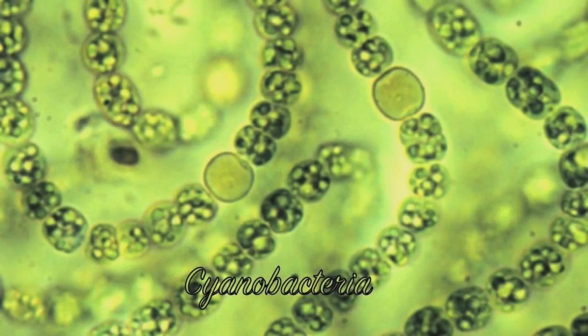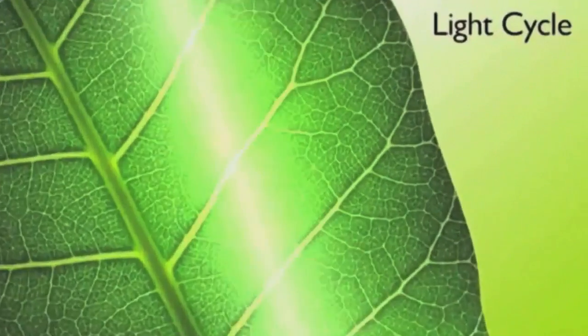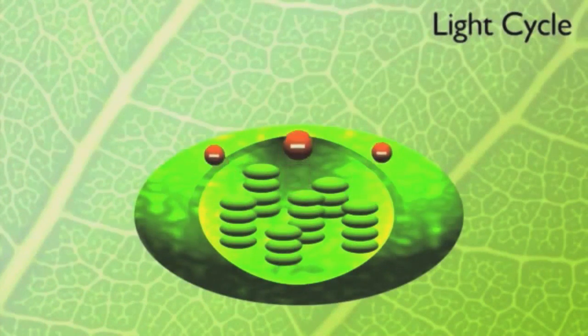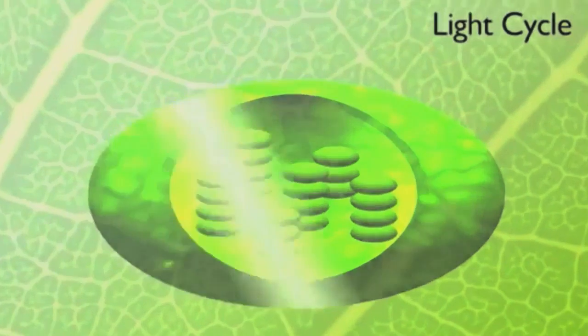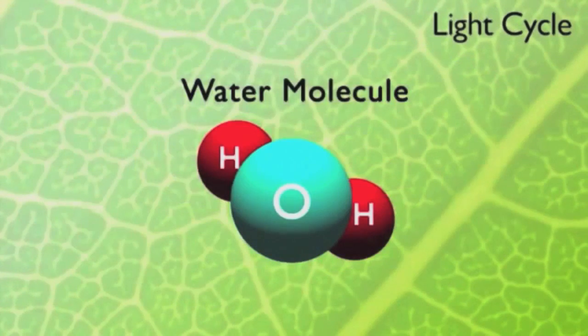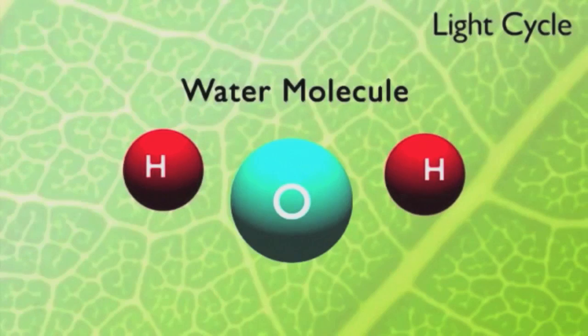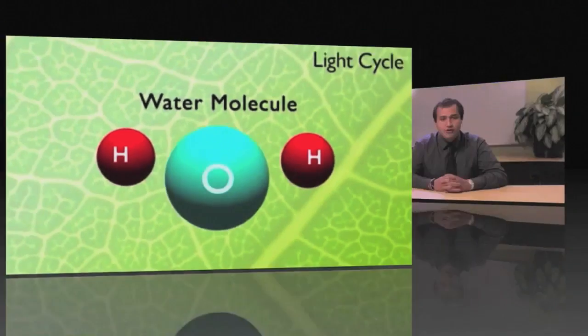Three billion years ago, cyanobacteria were able to use sunlight, gases, and water to synthesize organic molecules, which led to oxygen gas as a waste product. When light excites some of a molecule's electrons, it causes them to leave the molecule. Light also splits a water molecule into hydrogen and oxygen. The oxygen is a waste product. 2.5 billion years ago, most of the oxygen produced through photosynthesis